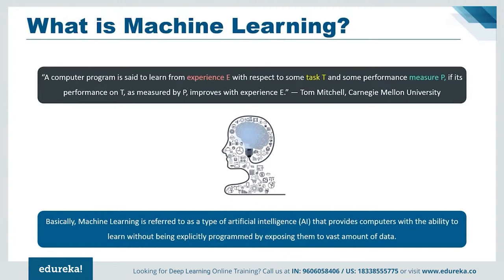Machine learning is referred to as a type of artificial intelligence that provides computers with the ability to learn without being explicitly programmed, by exposing them to vast amounts of data. The core principle behind machine learning is to learn from datasets and try to minimize the error or maximize the likelihood of predictions being true.